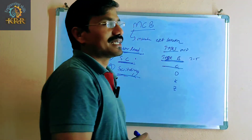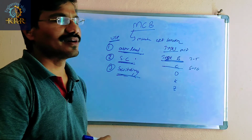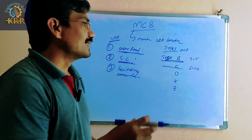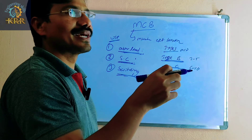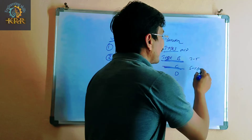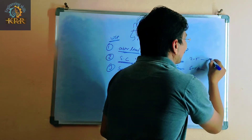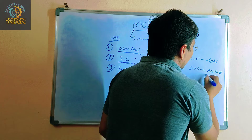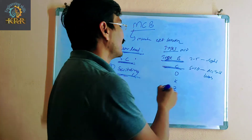Type C MCBs have a minimum tripping current of 5 to 10 times their rated current. These are mainly used for fans, fridges, air conditioners, lights, and some inductive loads.